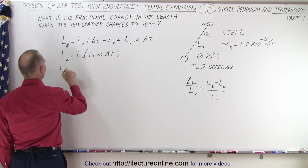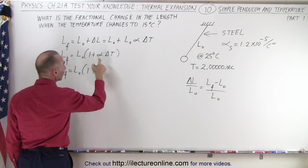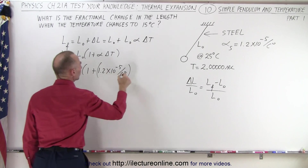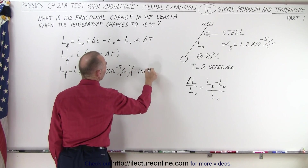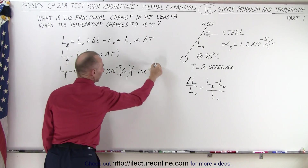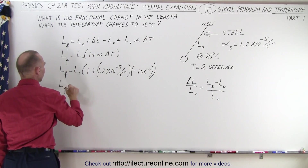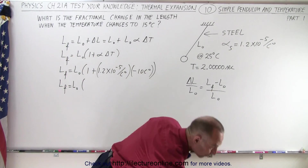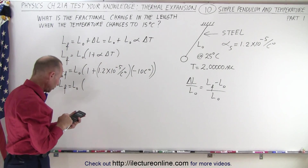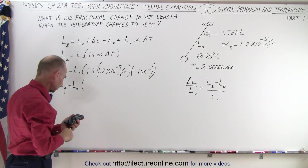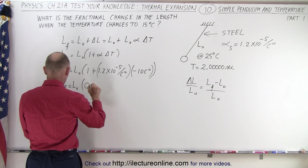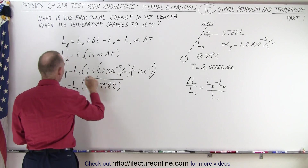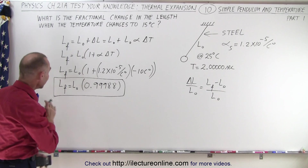Let's plug in what we have. So we have L_final equals L_initial times (1 plus alpha, which is 1.2 times 10 to the minus 5 per centigrade degree), and then we multiply that times the change in temperature, which is negative 10 centigrade degrees. Notice that this is going to make that into a negative quantity. So we end up with 1 minus 1.2 times 10 to the minus 4, which equals 0.99988. So now we have a relationship between the final length and the original length.